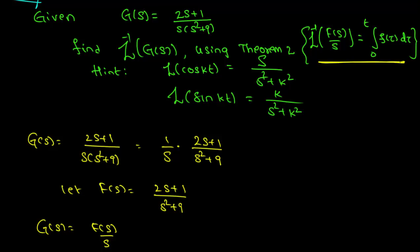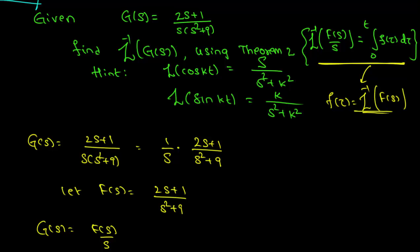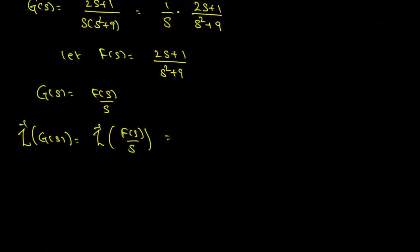Theorem 2 says that the inverse Laplace transform of F(s)/s is the integral from 0 to t of f(τ) dτ, where f(τ) is the inverse Laplace transform of F(s). So this is the integral from 0 to t of f(τ) dτ.